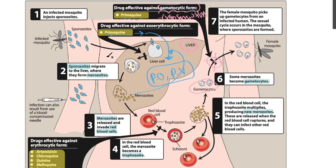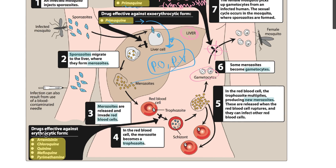Now we will discuss the most important drugs: those effective against the erythrocytic form in the circulation. These drugs block the transformation from trophozoite to schizont. They include artemisinin, chloroquine, quinine, mefloquine, and pyrimethamine.